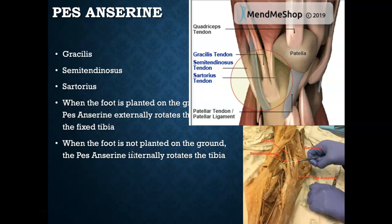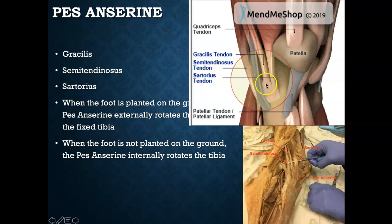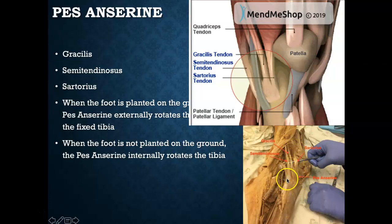The pes anserine, or sergeant muscles, all attach to the medial tibial plateau. Sartorius, gracilis, and semitendinosus tendons come down to their medial attachment. They are independent tendons proximally but essentially become one tendon structure at the medial tibial plateau. You can see them beautifully on a cadaver dissection.